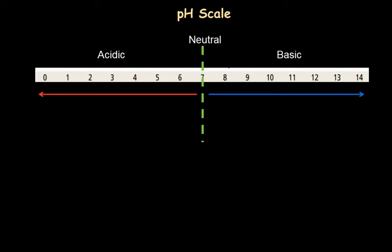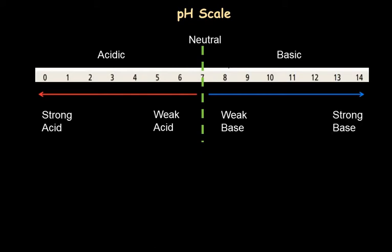Let's understand in terms of pH what are weak acids, weak bases, strong acids, and strong bases. A pH closer to 7 on the acidic side — from 4 to 7 — can be called a weak acid, and a pH on the basic side closer to 7 — from 7 to 10 — can be called a weak base. Acids with pH far from 7, that is 0 to 3, are called strong acids, and substances on the basic side with pH from 12 to 14 are called strong bases. One of the common indicators to identify acids and bases is the universal indicator.